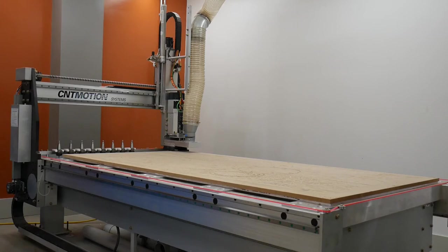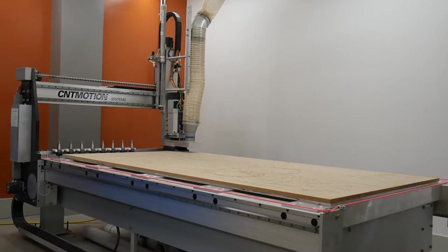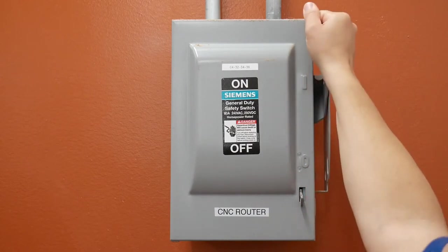This is the CNT Motion 950 CNC router. Let's go over the CNC router startup procedures. To turn on the main power, flip the switch on the wall-mounted disconnect.